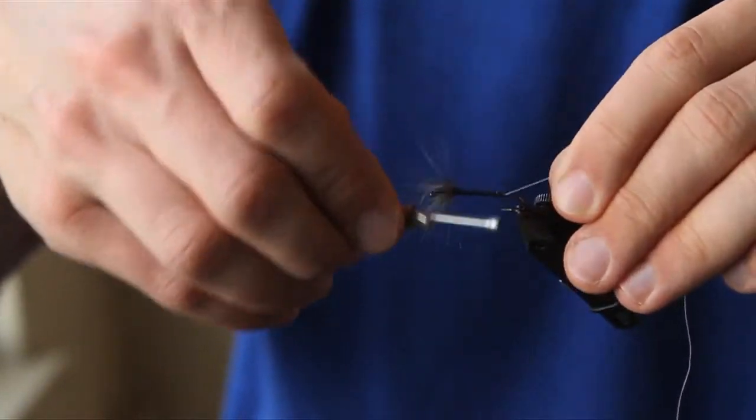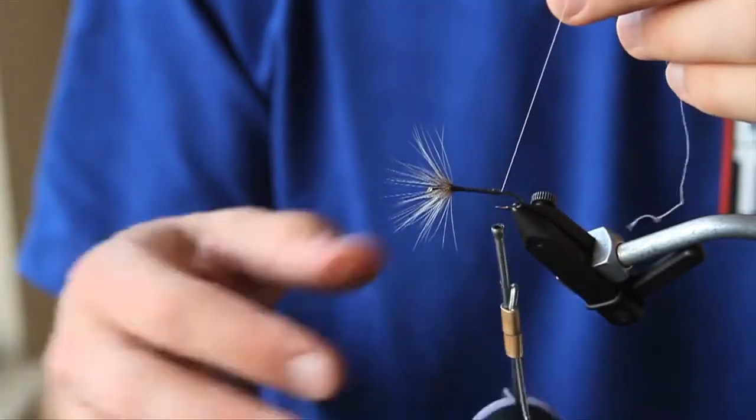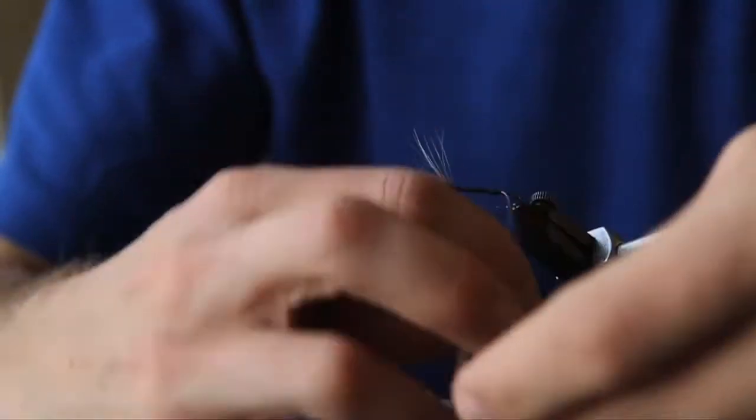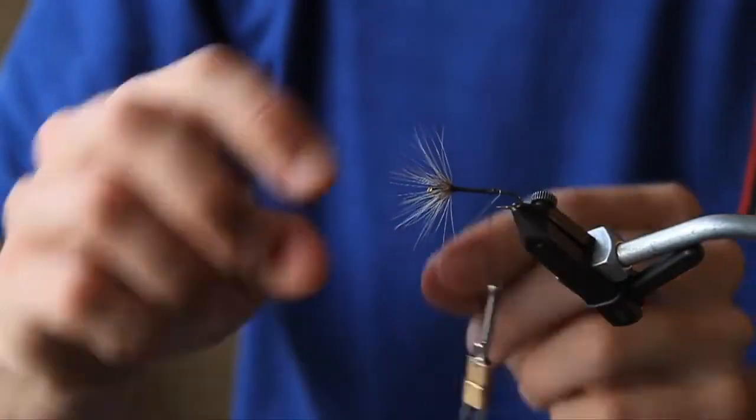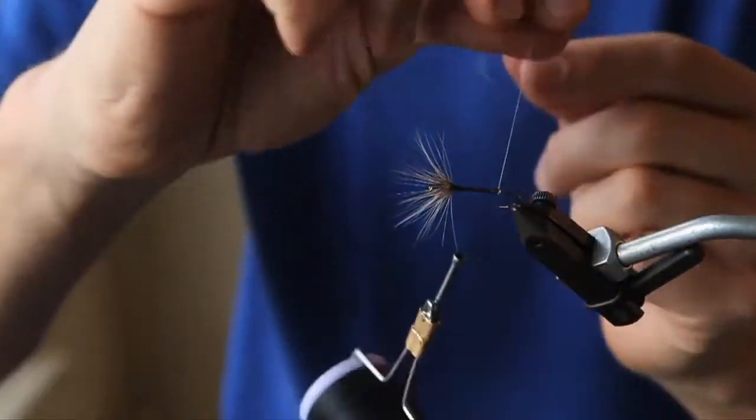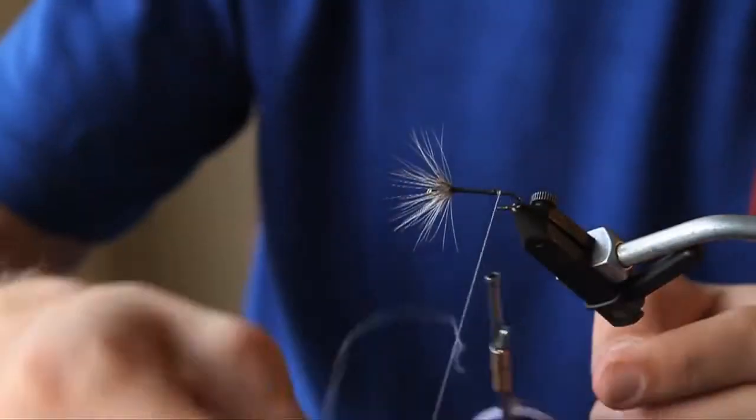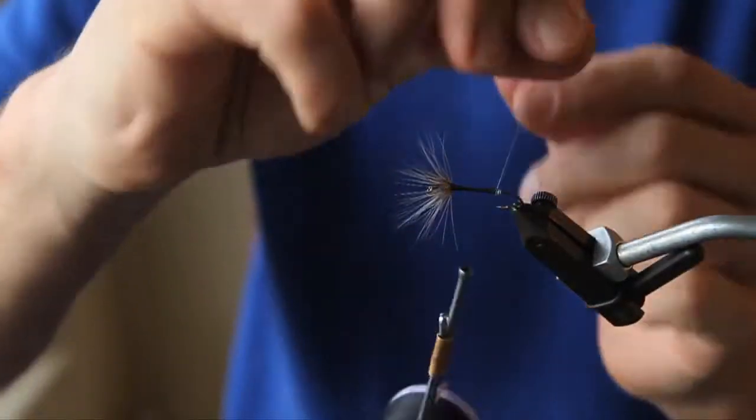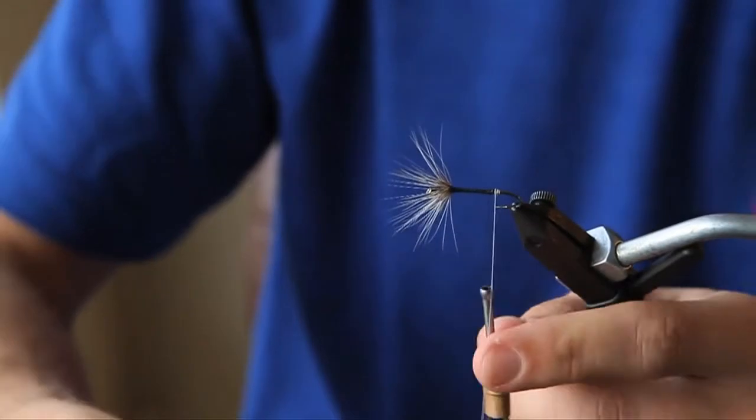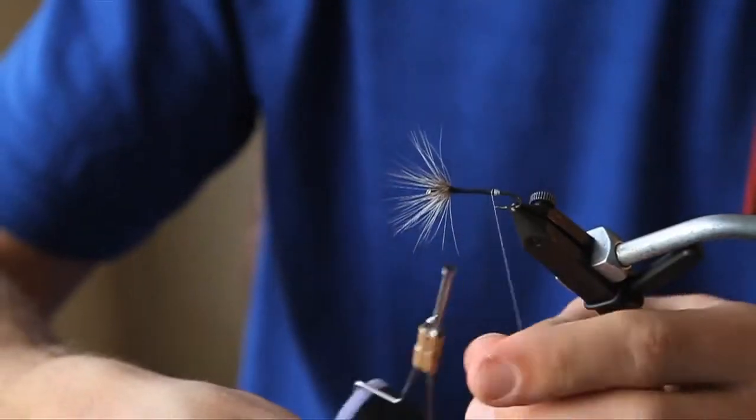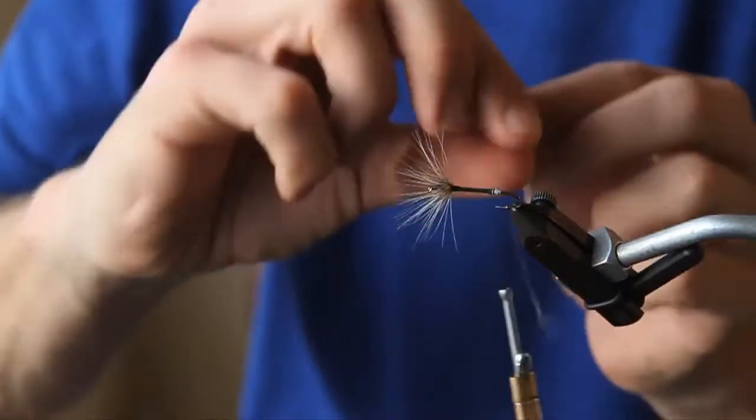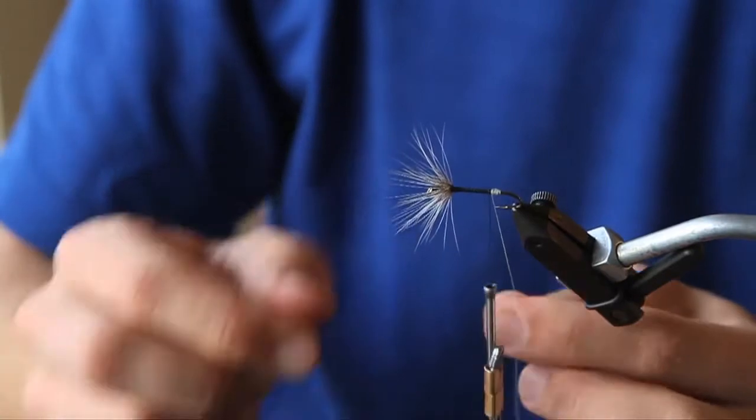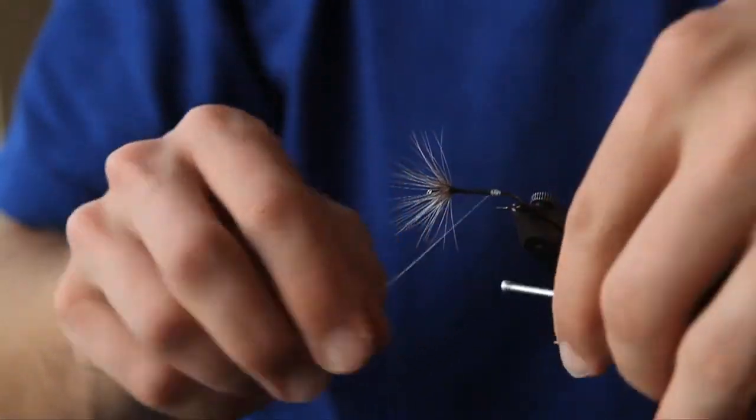All I did here is just getting a little segment of a lighter color thread. Some people might like red. I just took white because it doesn't make a difference, but it might increase the contrast enough to make it a little bit more visible. And just a few wraps to make it look like a little egg sack, or just to make it look kind of cool.